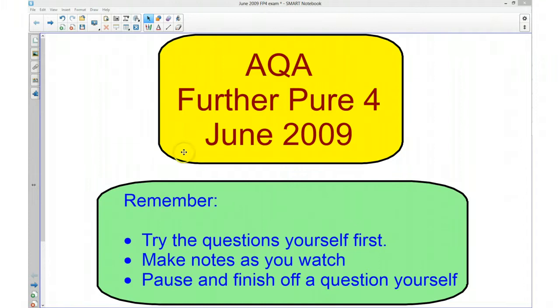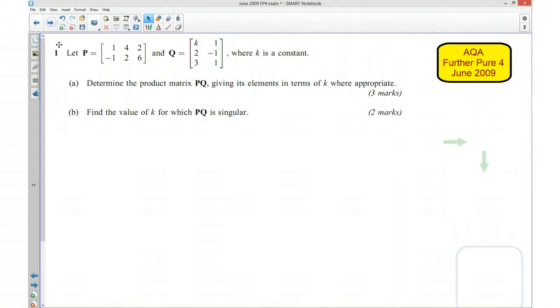I'm going to be going through the whole paper over the next series of videos. So to get us started, question number one. It says that P is equal to this matrix here and Q is equal to this matrix here, and the number k is a constant.